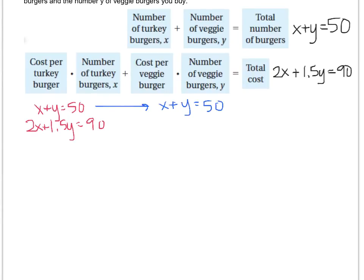Now you could get the y by itself like we're used to doing. But just to spice things up a little, I'm going to get the x by itself. So to prove the point that it doesn't matter which variable you solve for, I'm going to actually move the y and so I'll get x equals 50 minus y.